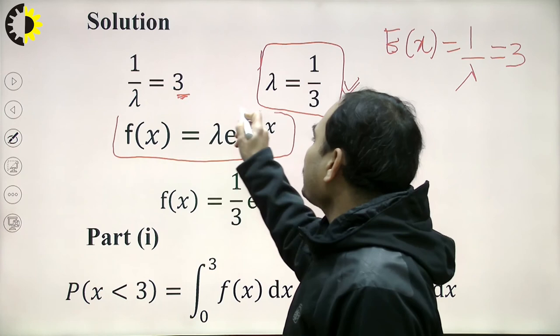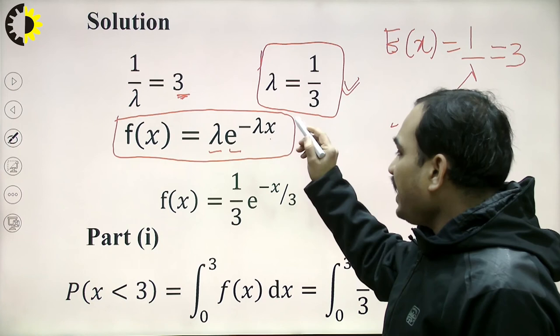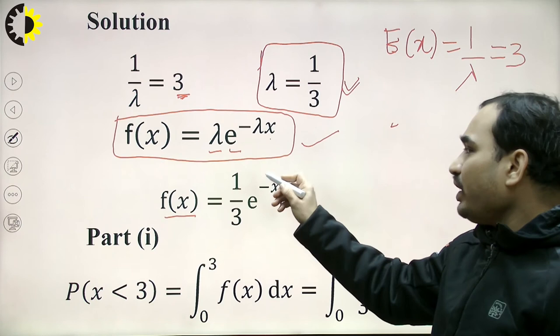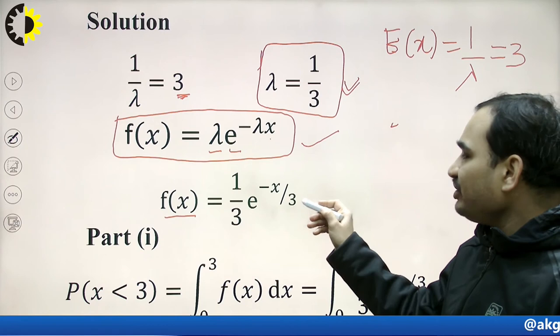Now let us define the PDF for this example. The generalized form is f(x) = λe^(−λx). Substituting λ = 1/3, we get f(x) = (1/3)e^(−x/3). The first part asks for the probability that the call ends within three minutes.